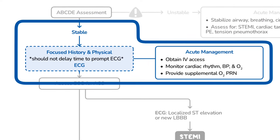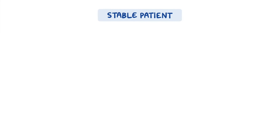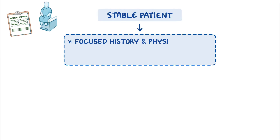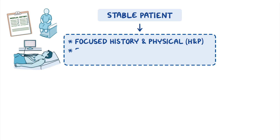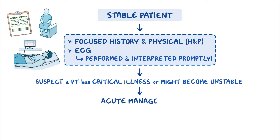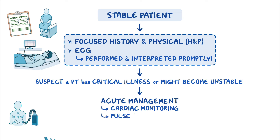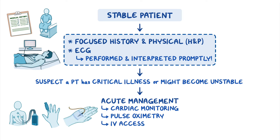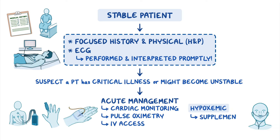So what do you do in the case of a stable patient presenting with chest pain? Your evaluation begins with a focused history and physical examination, or H&P, alongside an electrocardiogram, or ECG. That ECG needs to be performed and interpreted promptly. You're going to use it to evaluate the patient for some life-threatening conditions. At the same time, if you suspect the patient has a critical illness or might become unstable, acute management will be required. Place them on continuous cardiac monitoring with pulse oximetry and establish IV access. If they're hypoxemic, you should also provide supplemental oxygen.